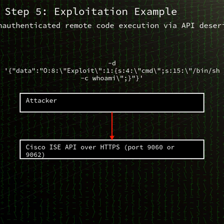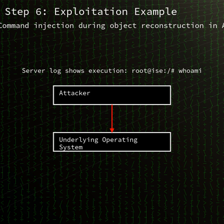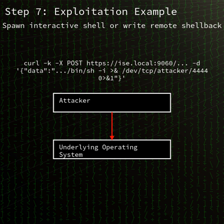In this case, insufficient input validation and unsafe deserialization in a specific ISE API endpoint enable an attacker to inject malicious data that results in command execution on the host operating system. Researchers at the Zero Day Initiative initially reported a dangerous deserialization flaw in a specific ISE API. By sending a crafted request containing maliciously formed objects, an unauthenticated attacker can trigger remote code execution with root privileges. Security expert Bobby Gould publicly demonstrated a working exploit, showing how simple it is to chain the injection payload into system commands.